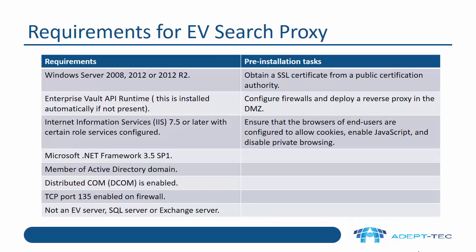There are a number of requirements for the EV Search proxy server. It must have the Enterprise Vault API runtime installed, but this is actually installed automatically if not present. IIS 7.5 or later needs to be configured with certain role services. The EV Search proxy server cannot be an EV server, a SQL server, or an Exchange server.